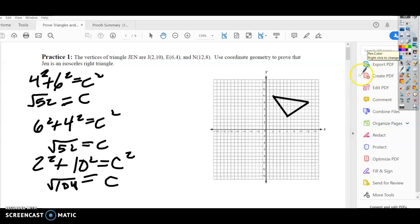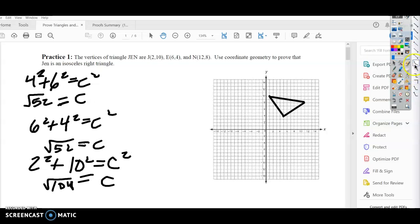So how do you use the Pythagorean theorem? I already have my points put on here, so I just took these points: 2, 10, 6, 4, and 12, 8. I plotted those points, and now I'm going to look at how to use the Pythagorean theorem.